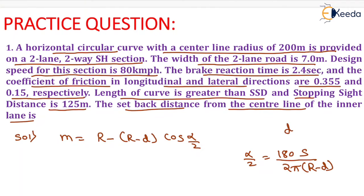The value of d equals w divided by 4, and w is given as 7 meters. So d = 7/4 = 1.75 meters. Now we will substitute the values of d, R, and S into the equation to calculate the value of α/2.